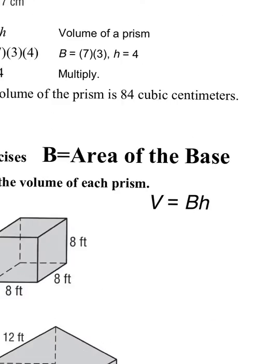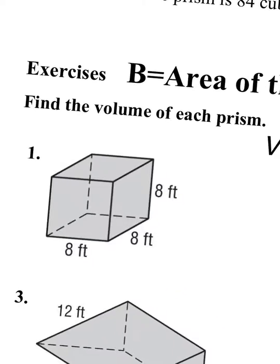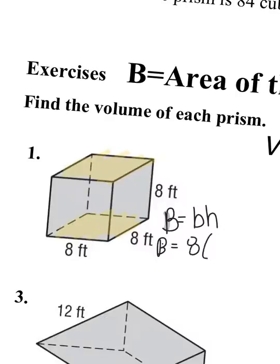For question number one, I have an option of what to call my base. Remember that a prism has two bases, so I'll call the bottom my base. I can see base times height right there — it is a square, so this is actually a cube. I'm going to work out the area of the base first. The area of the base is little b times h, so 8 times 8 equals 64.